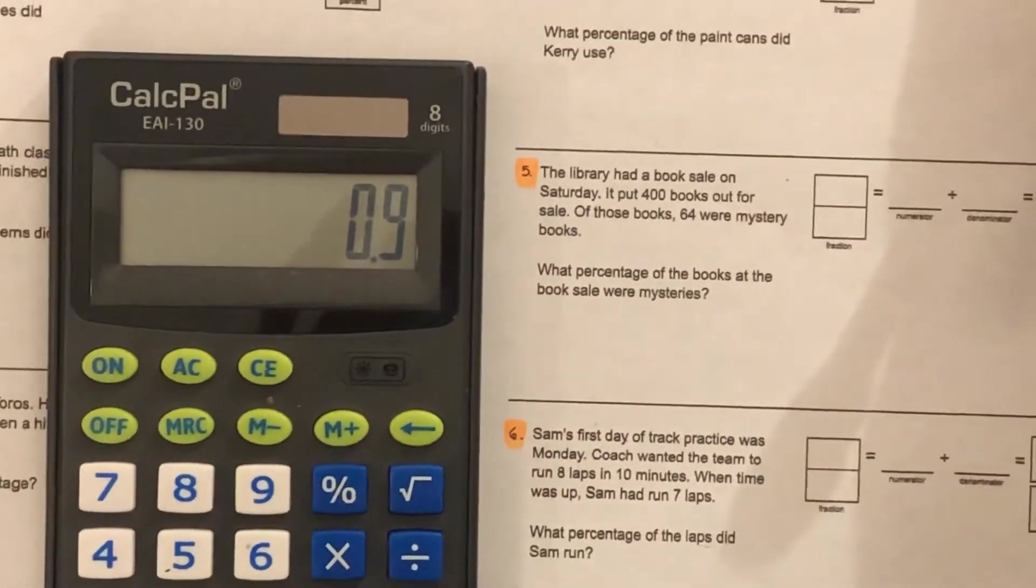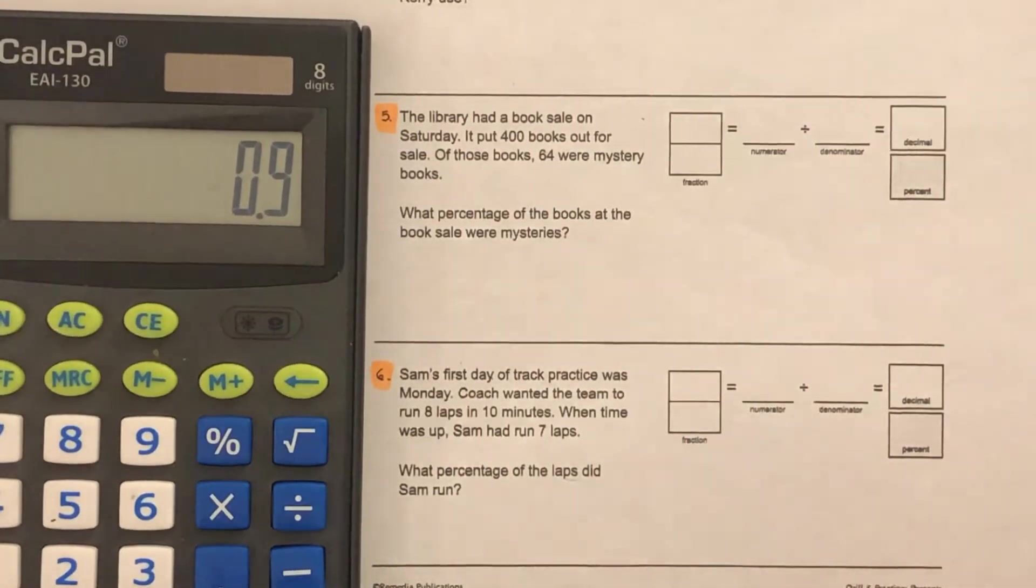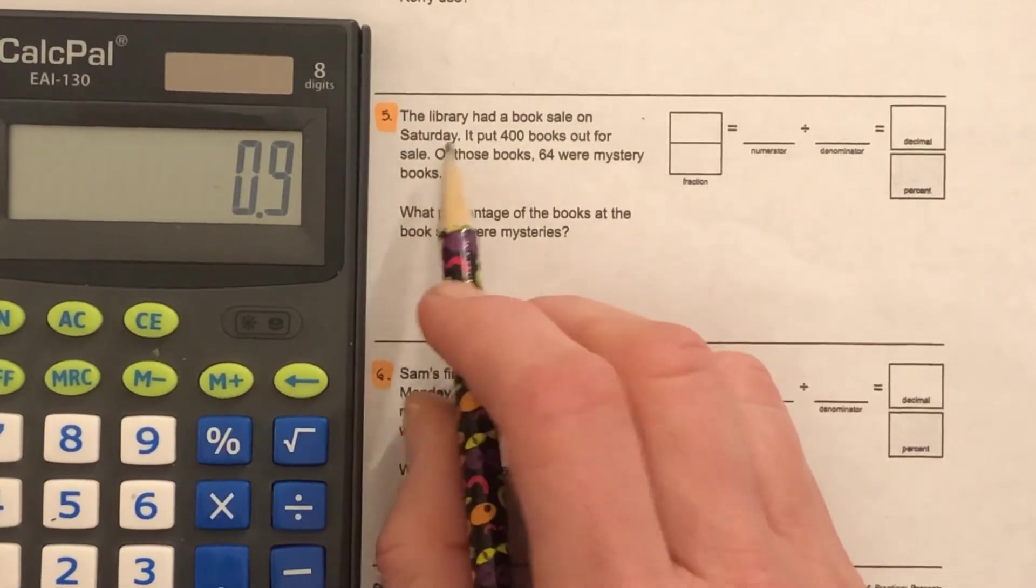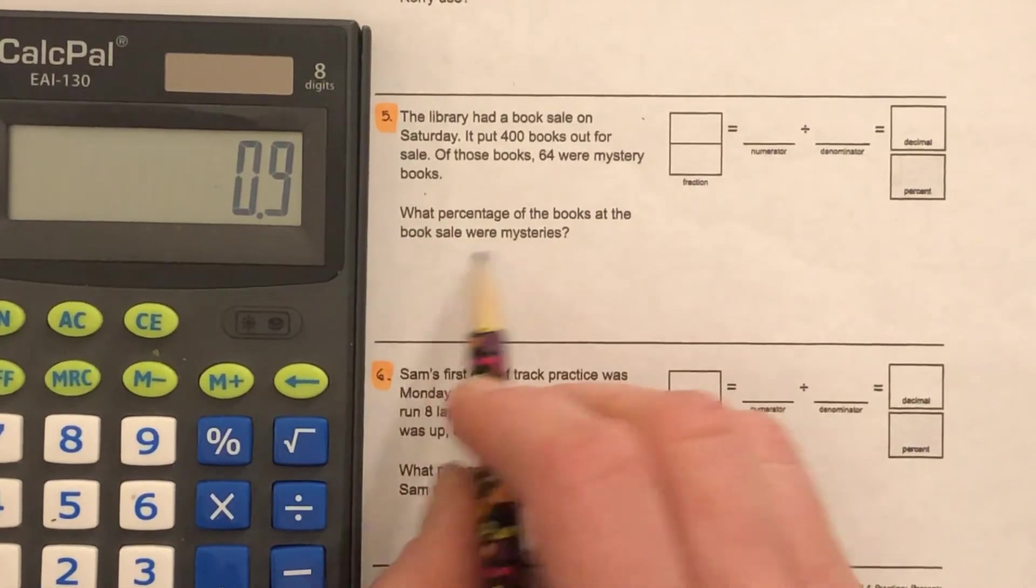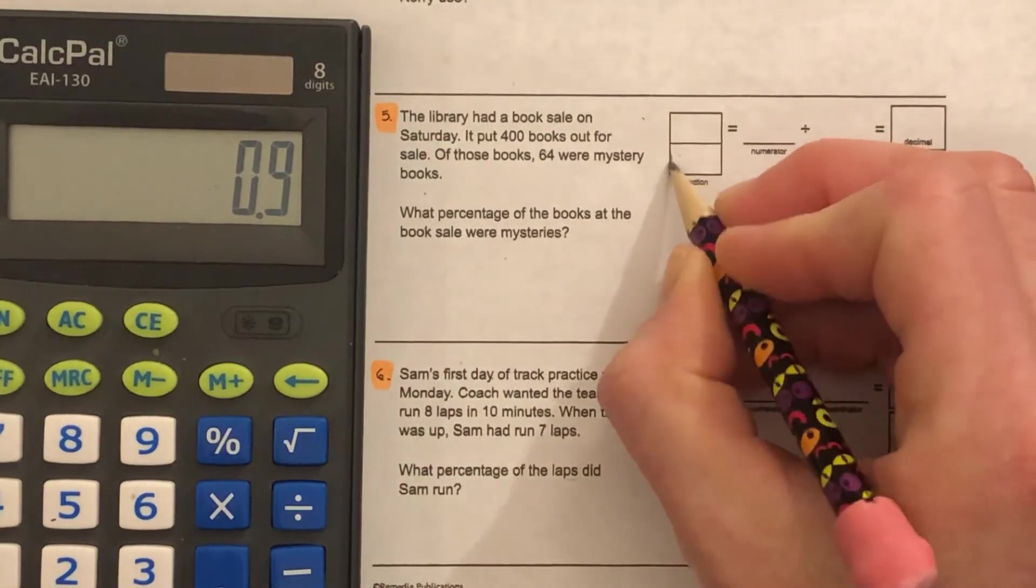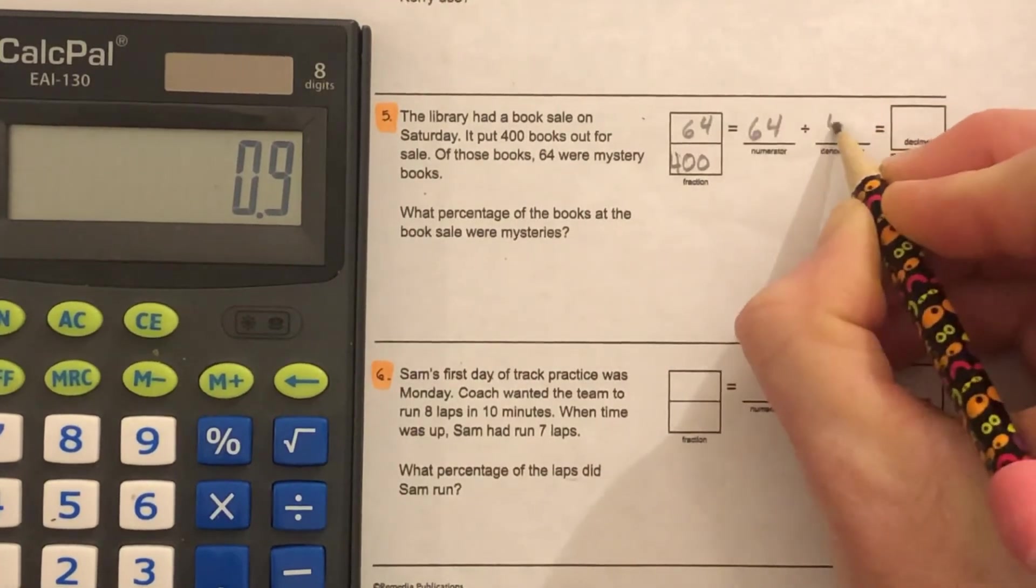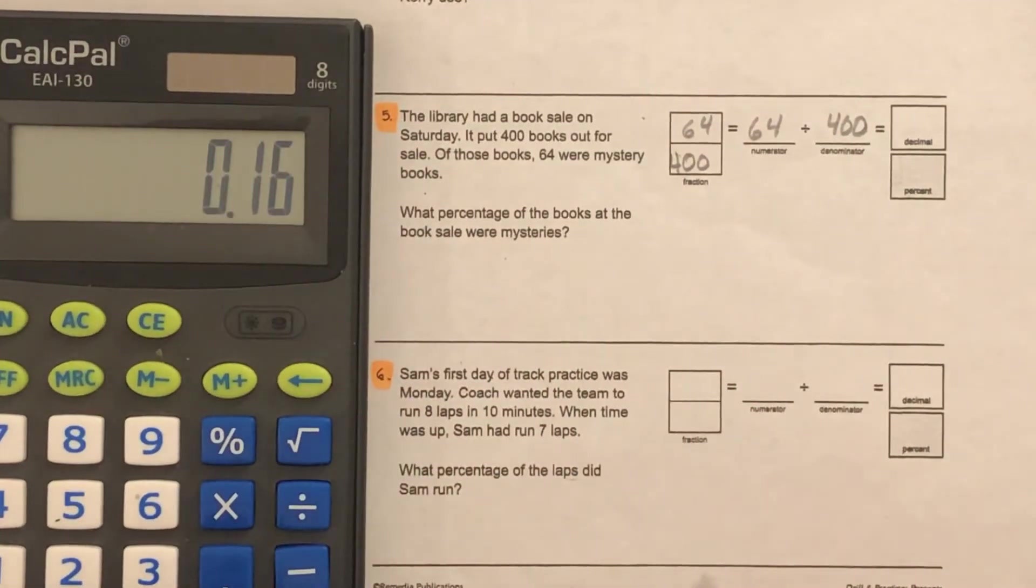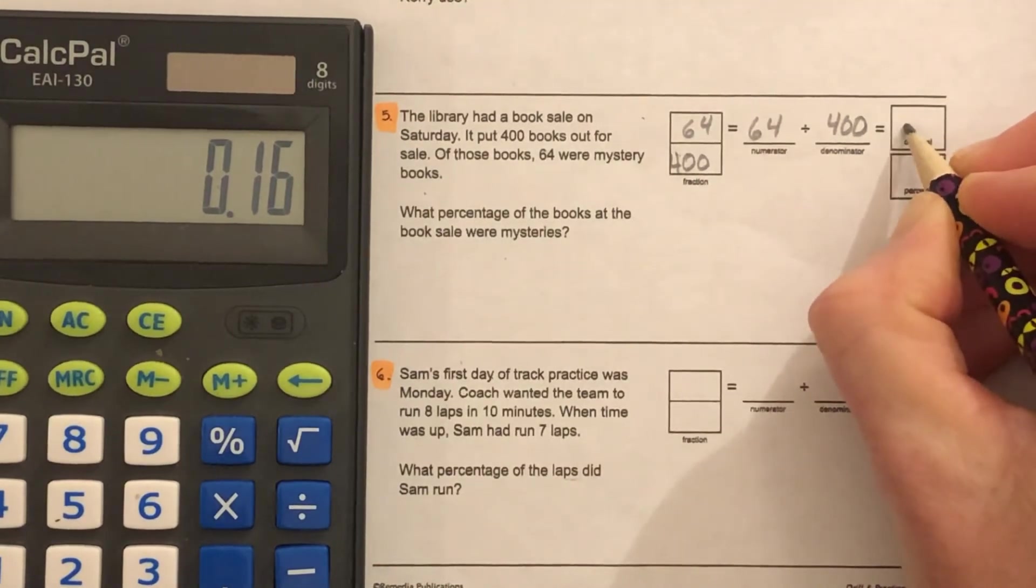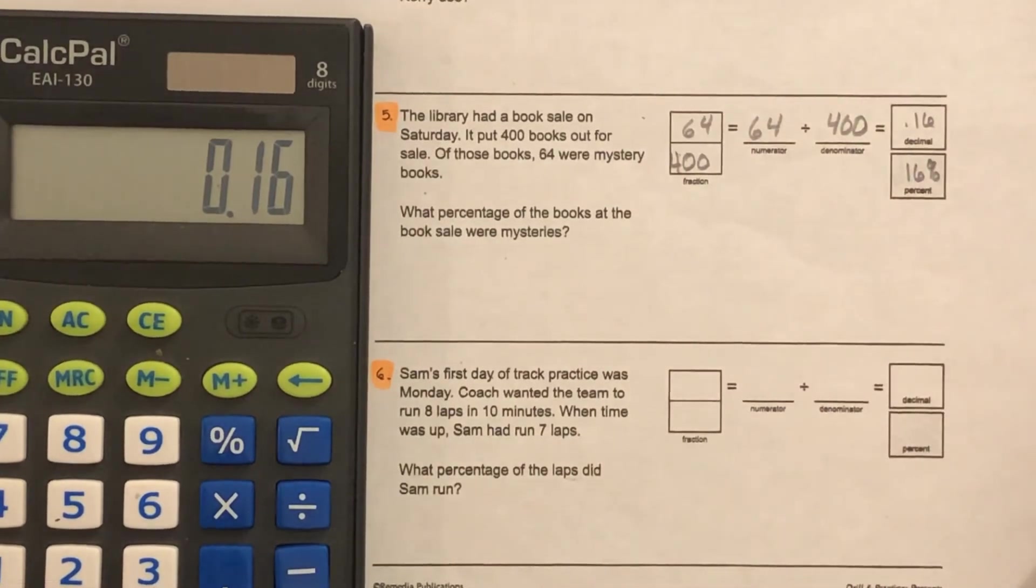All right, on over to number five and six. The library had a book sale on Saturday. It put 400 books out for sale. Of those books, 64 were mystery books. What percentage of the books were mystery? All together there were 400. There were 64 mystery. Let's divide it out: 64 divided by 400. In decimal form it's 16 hundredths, which is easily translated to 16 percent.